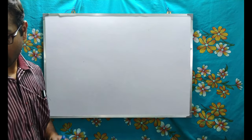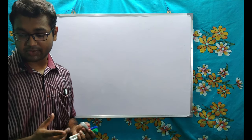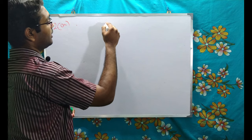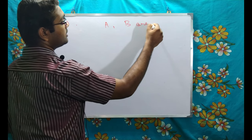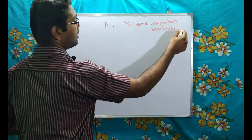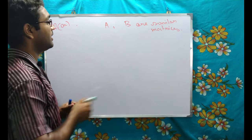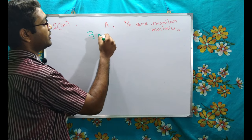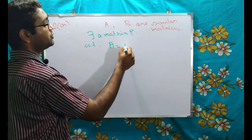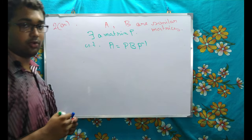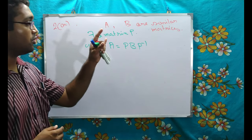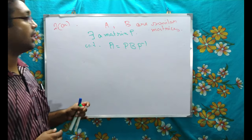Now let's come to the next one. They are saying: if A and B are similar matrices, then they have the same eigenvalues. Question 2A: A and B are similar matrices. What is the meaning of similar matrices? Similar matrices means there exists a matrix P such that A = P B P⁻¹. This is the definition. Now I have to prove that these two matrices have the same eigenvalues.